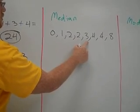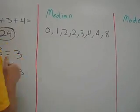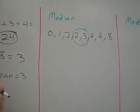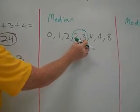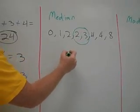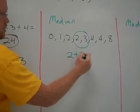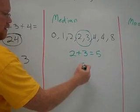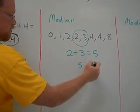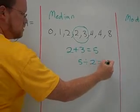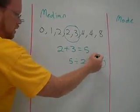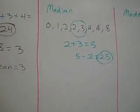This 2 and 3 share the middle. So when the middle is shared by two numbers, you add the numbers together. So we have 2 plus 3 equals 5. Now you have to divide that by 2. So 5 divided by 2 is 2.5. So your median is 2.5 for this set of data.